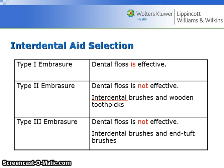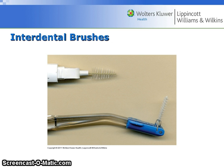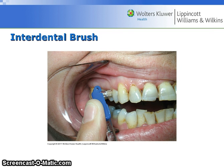Interdental aid selection is based on the type of embrasure you are dealing with. In a type 1, dental floss is effective, but in a type 2 or 3, it is not effective. Here are different types of interdental brushes, and this shows a patient using an interdental brush.